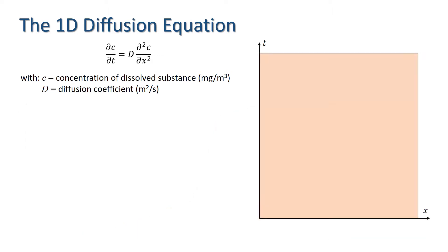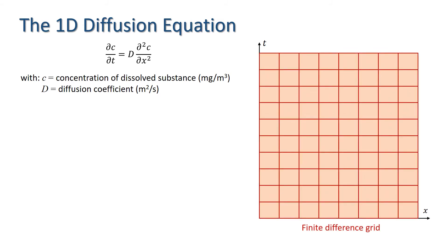We impose a finite difference grid onto our computational domain with fixed cell spacing delta x and time step delta t, and adopt the notation c_ij to represent c evaluated at position i·delta x and time j·delta t.